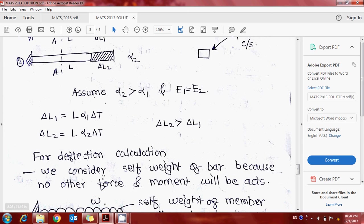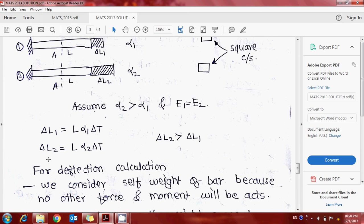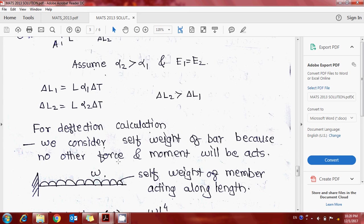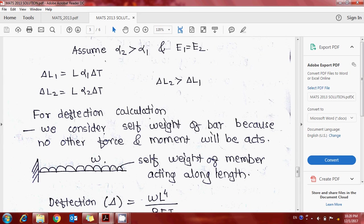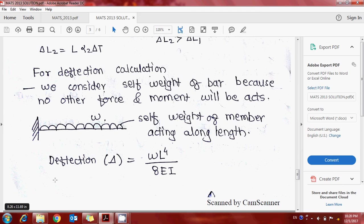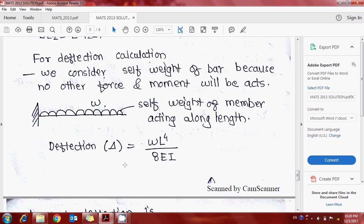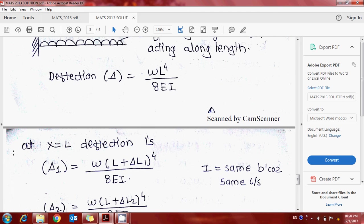Now, as per the given setup, two metals have the same cross-section area but different coefficients of thermal expansion, alpha 1 and alpha 2. Here we assume alpha 2 is greater than alpha 1, and equal modulus E1 equals E2. Due to increasing temperature, since alpha 2 is more, the deformation delta L2 is obviously more than delta L1.